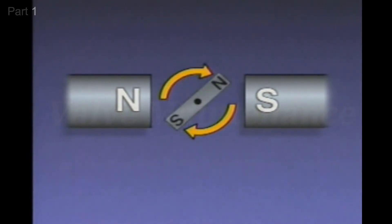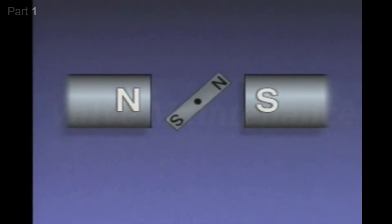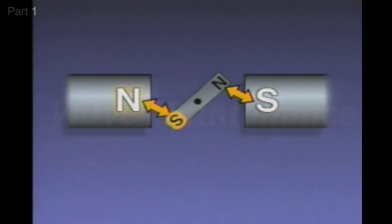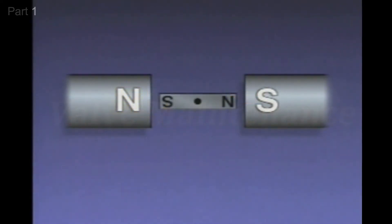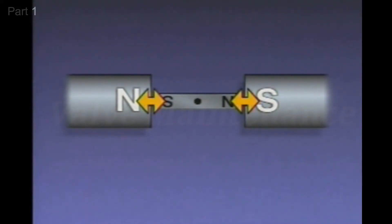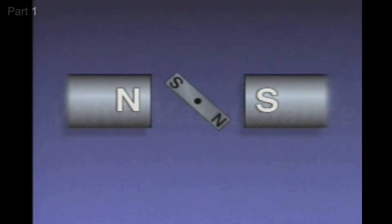As the bar magnet rotates, the repelling forces decrease because the like poles are getting farther apart. The bar magnet's north pole is attracted to this permanent magnet's south pole, and the bar magnet's south pole is attracted to this permanent magnet's north pole. The attracting forces increase as the unlike poles get closer to each other. So when the unlike poles are closest to each other, the attracting forces are the greatest. At this point, the bar magnet would stop unless it had enough momentum to carry it past the poles of the permanent magnets.